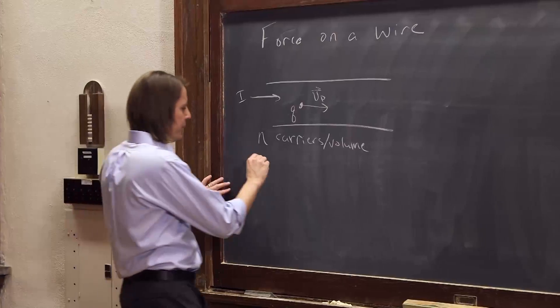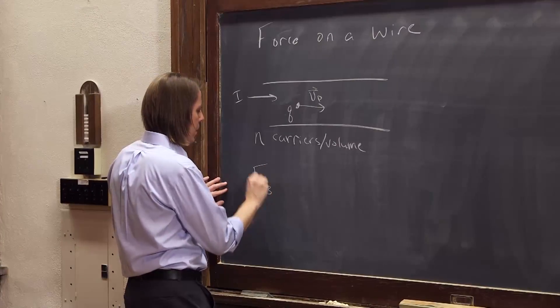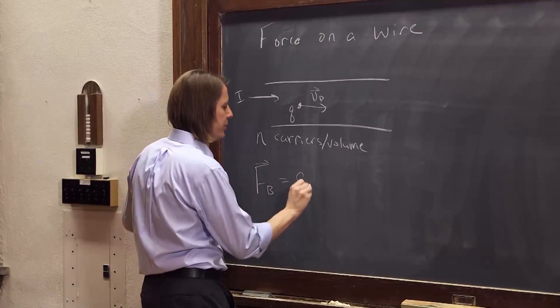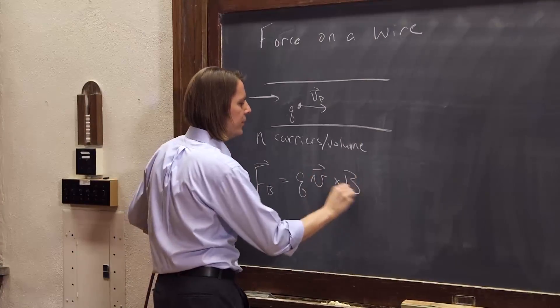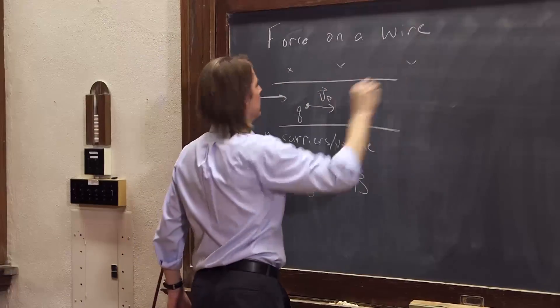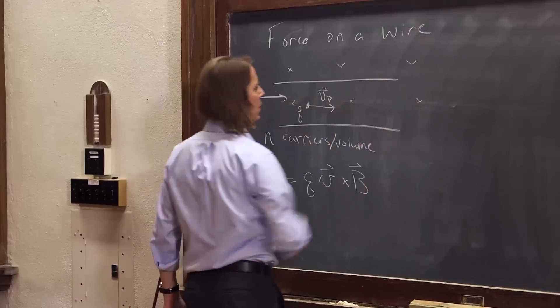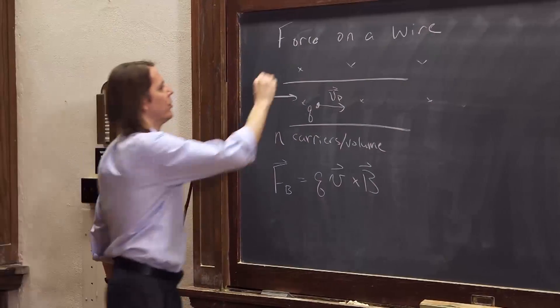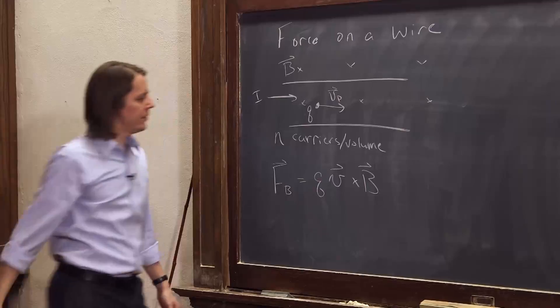So let's start with the standard expression FB for a free charge. It was Q V cross B. And of course, there is a B field present here. So B field sticking into the board, doesn't really matter the direction right now.